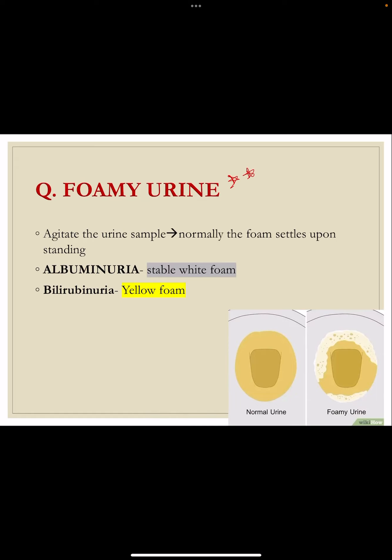Another viva question: what is foamy urine? Normally, if you agitate the urine sample, foam is formed but it dissipates upon standing. When the urine contains albumin (albuminuria), shaking the sample forms a white foam that is very stable on keeping. If yellow foam is formed, it is mostly due to bilirubin in urine. You should remember the causes of foamy urine.